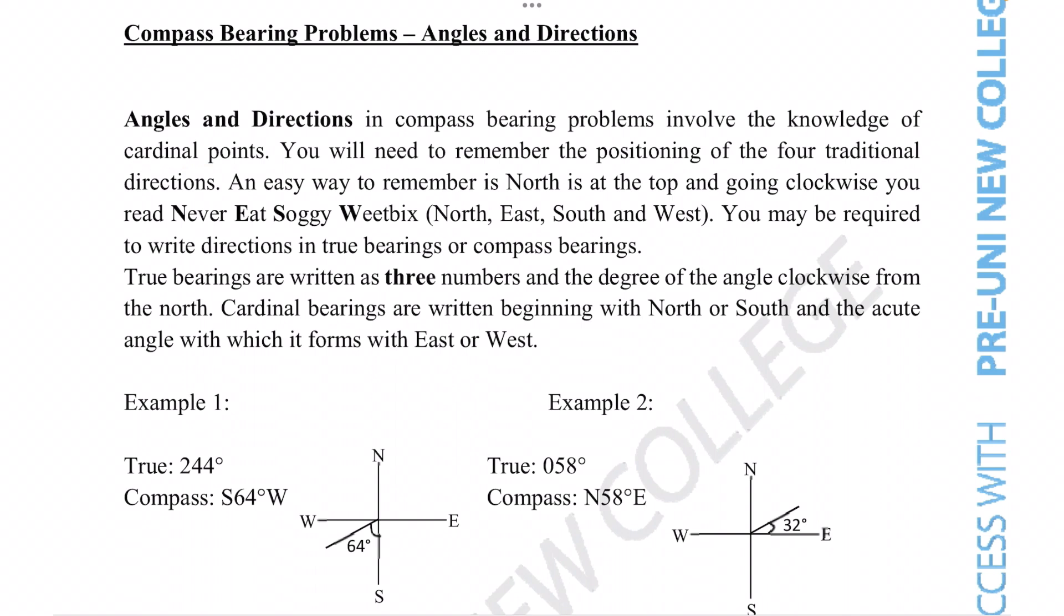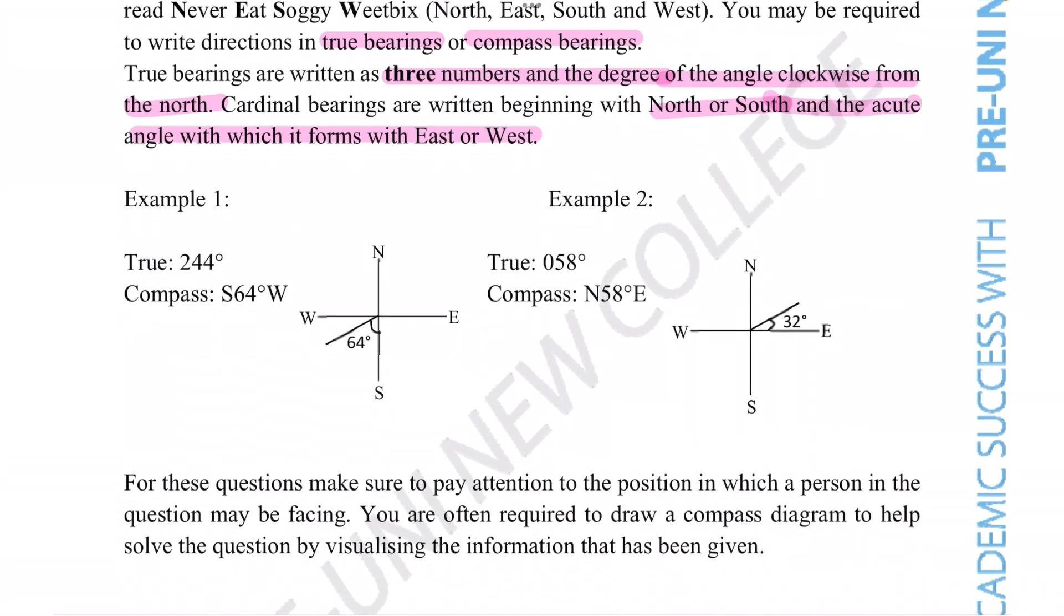You may be required to write directions in true bearings or compass bearings. True bearings are written as three numbers and the degree of the angle clockwise from north. Cardinal bearings are written beginning with north or south and the acute angle which forms with east or west. We're given two examples showing this here.